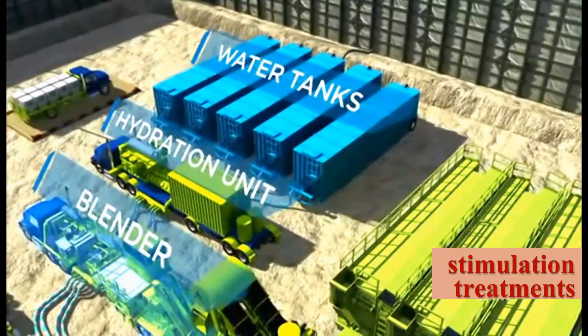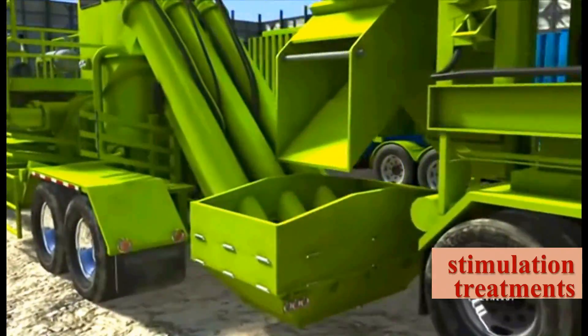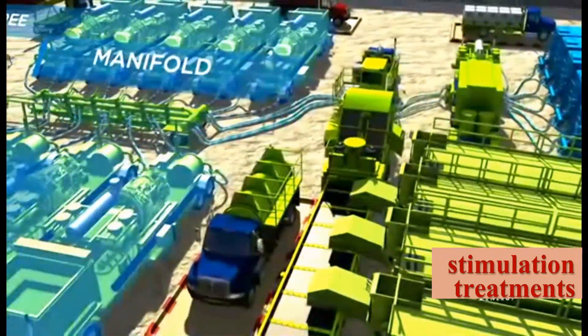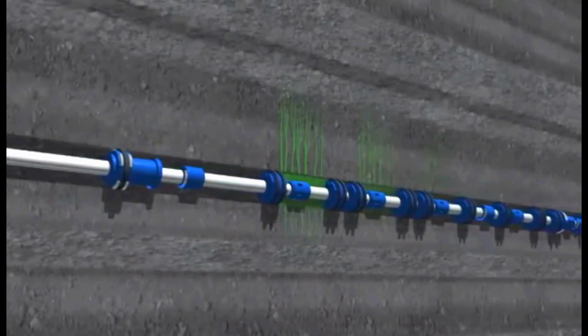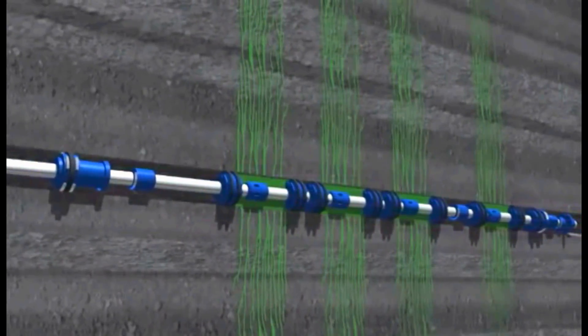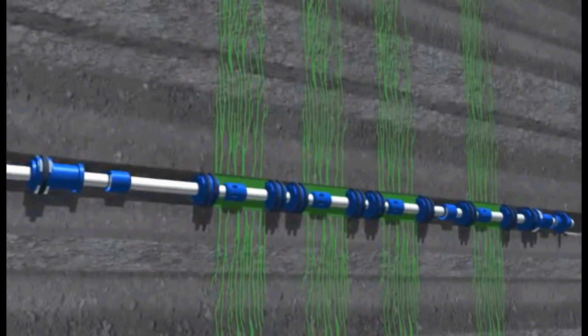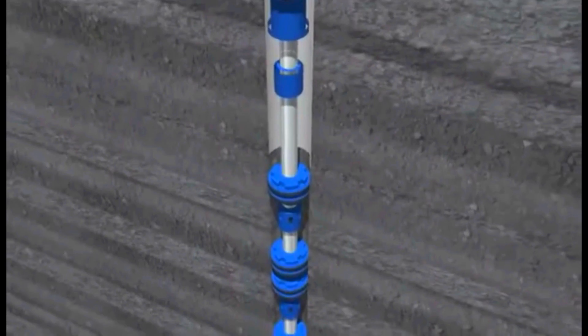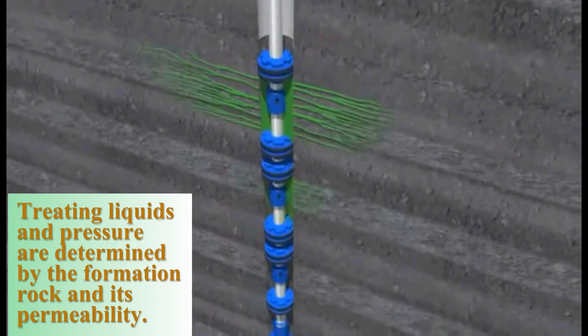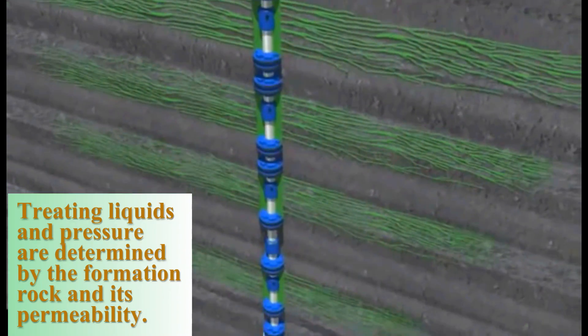In hydraulic fracturing and fracture acidizing, along with these treating liquids, several thousand pounds of surface pressure are also introduced into the formation. In any event, the specific type of treating liquids, coupled with pressure, is determined by the formation rock and its permeability in the pay zone.